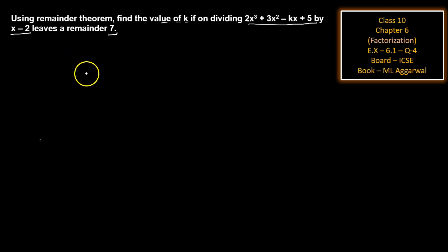So we write: divisor x - 2 = 0, therefore x = 2.